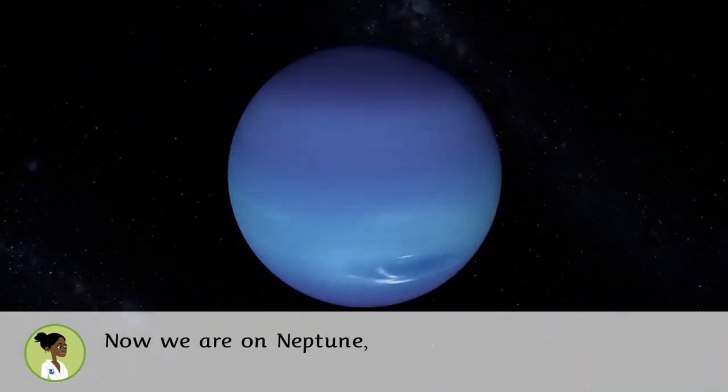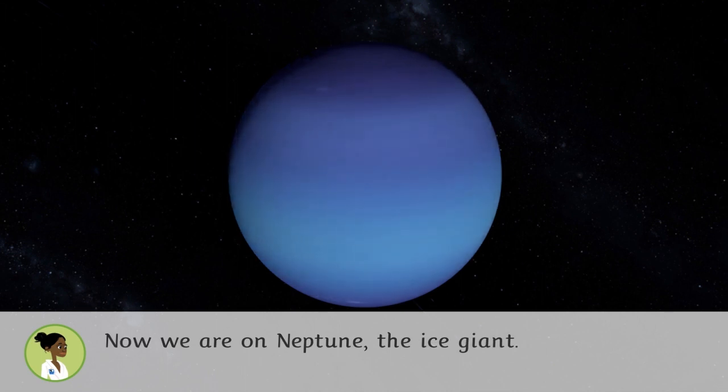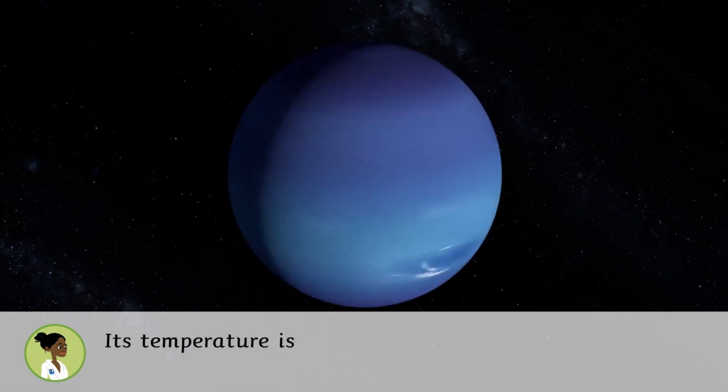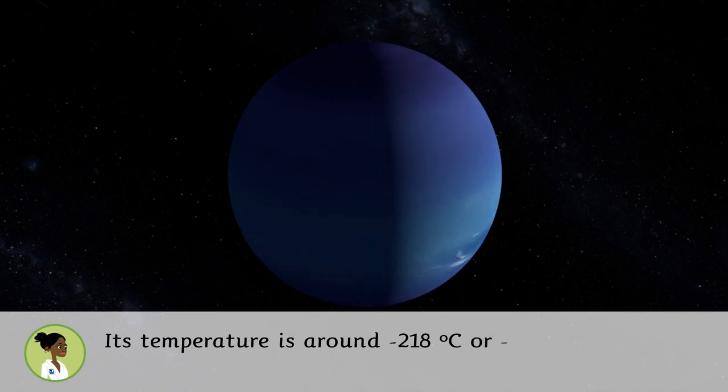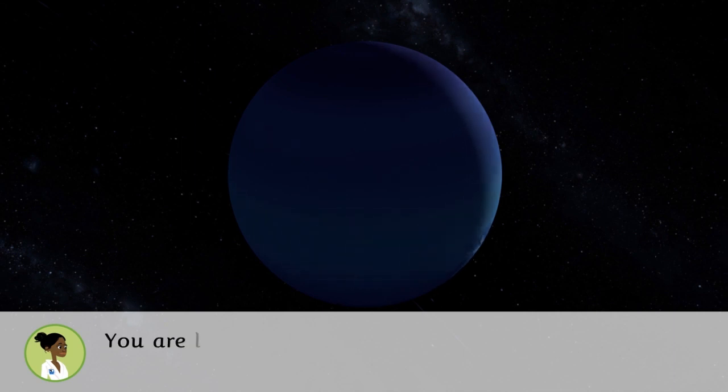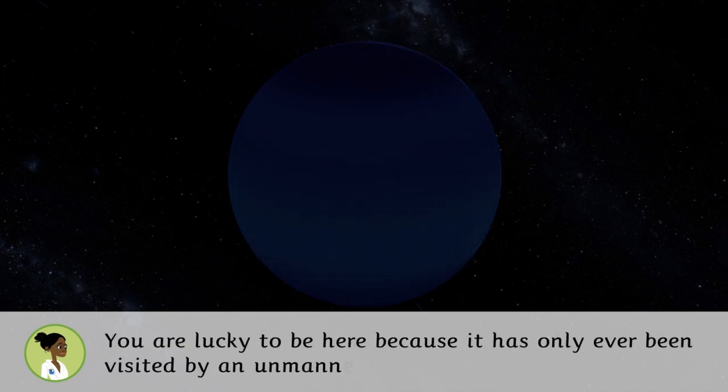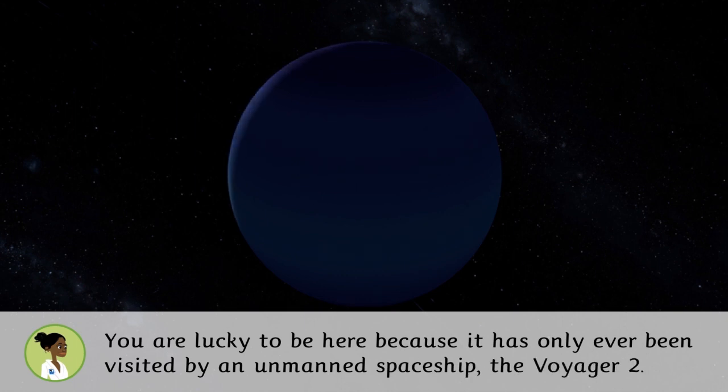Now we are on Neptune, the ice giant. Its temperature is around 218 degrees Celsius below zero or 360 degrees Fahrenheit below zero. You're lucky to be here because it has only been visited by an unmanned spaceship, the Voyager 2.